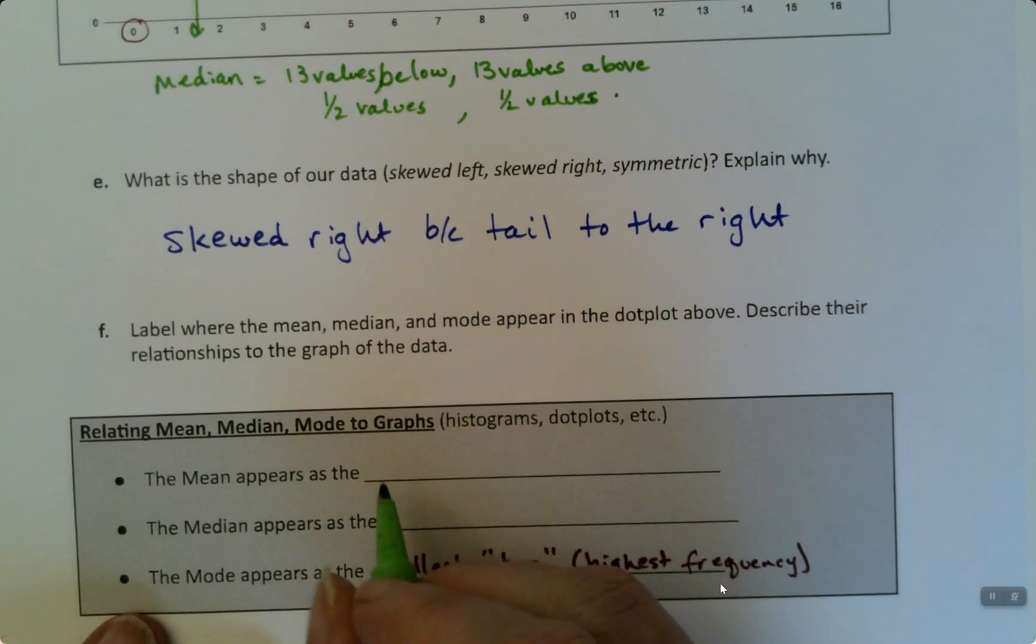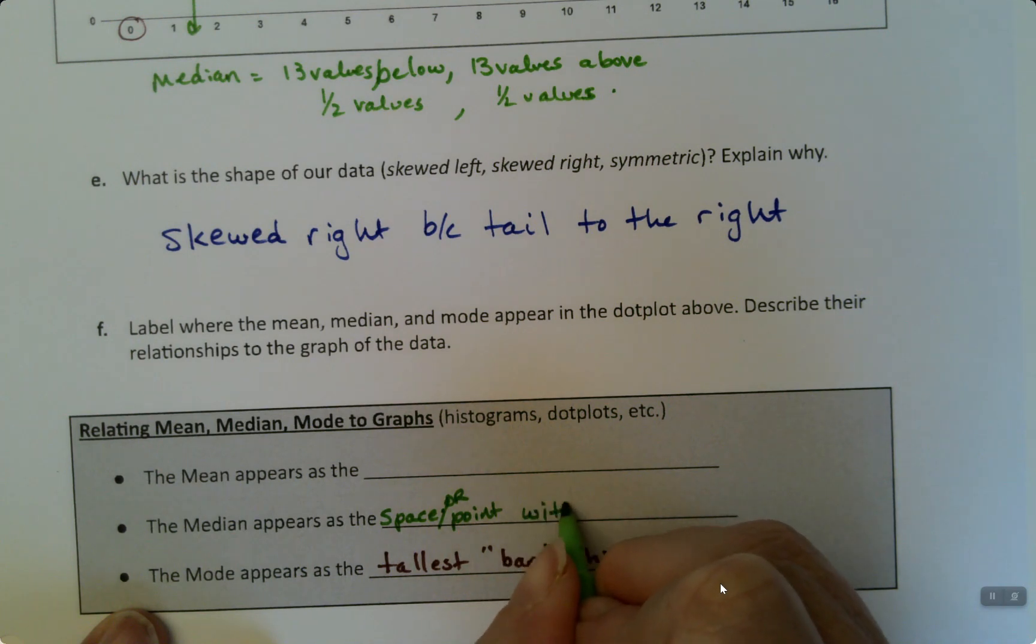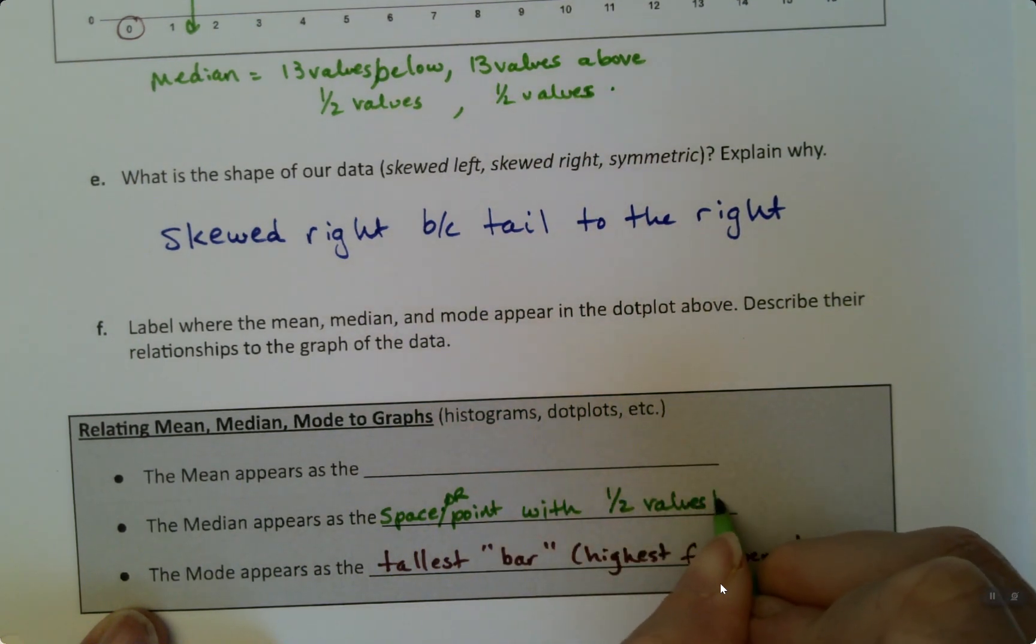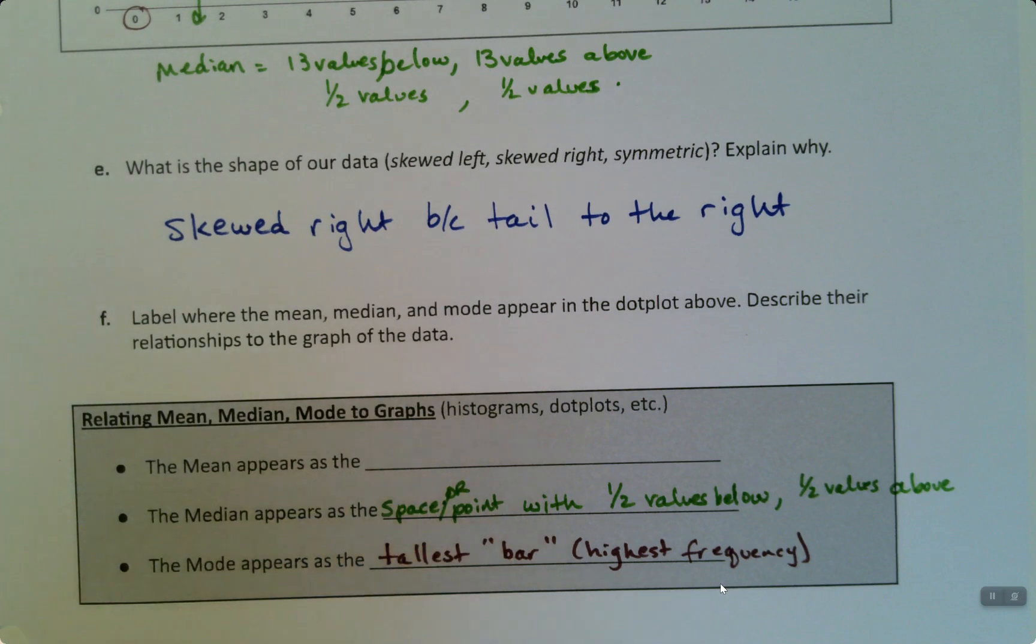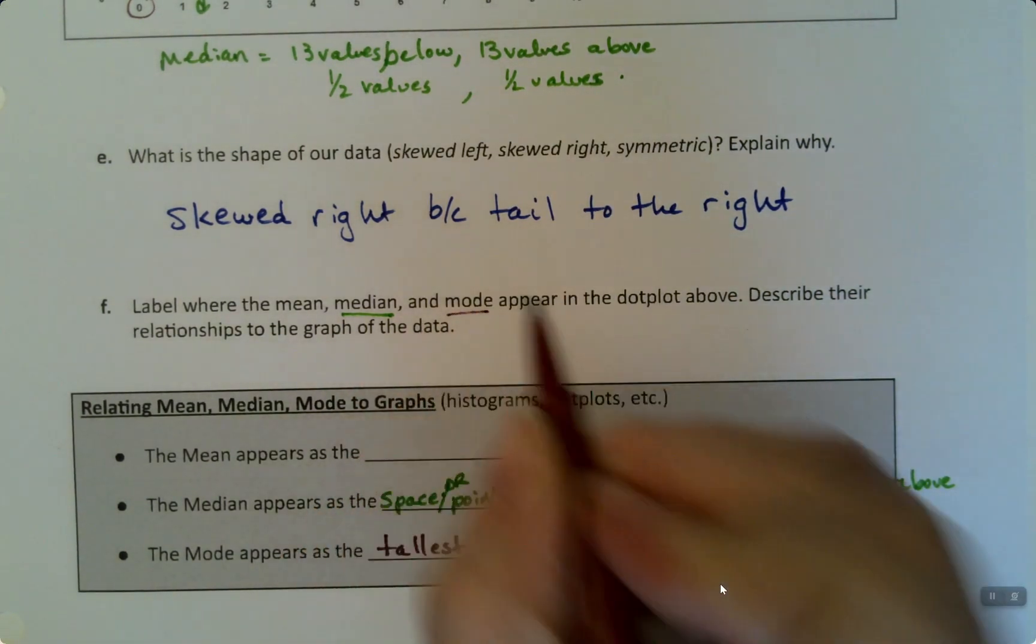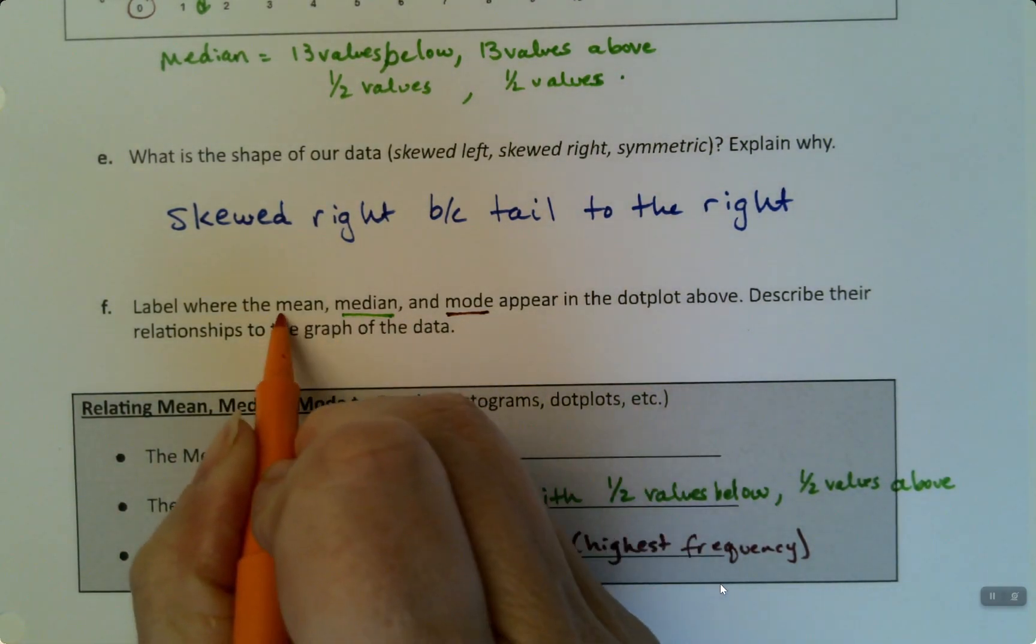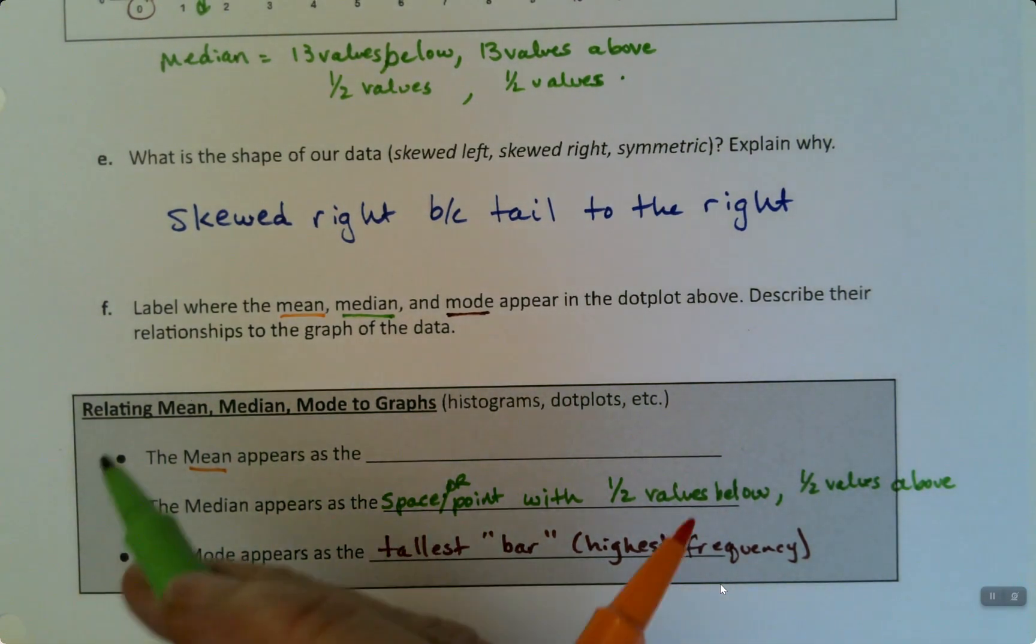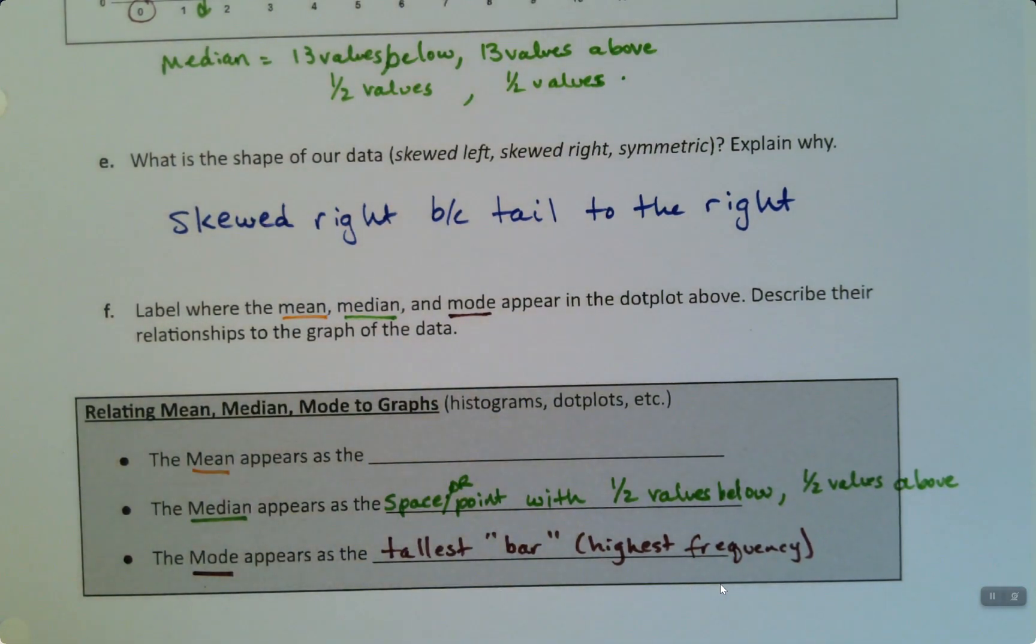That leads us to the mean. So I'm going to do the mean in orange. So the mean right here. How can we spot the mean? Well, the mean, the interpretation of it is actually kind of the most important of these three. And it's the hardest to get your brain around.